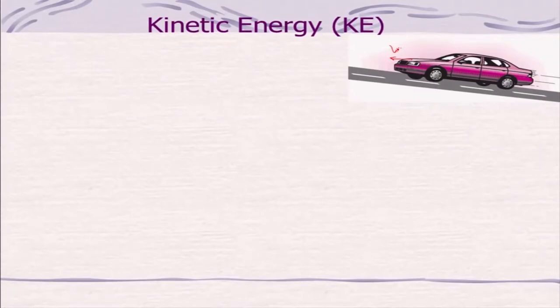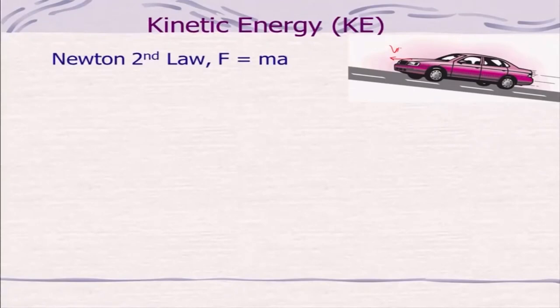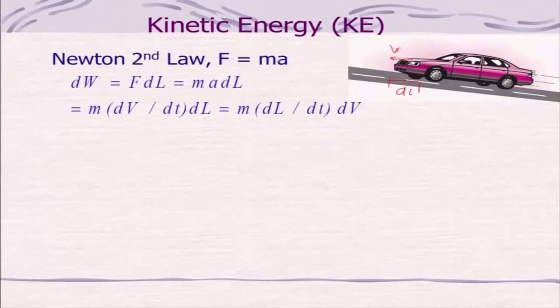If the car is moving with a certain velocity, that means somebody should be applying a force — otherwise it won't move. The car has to displace. According to Newton's second law, force equals mass times acceleration. The work done is force times change in length, F·dL, and F is mass times acceleration.